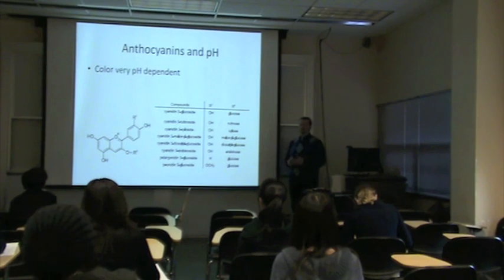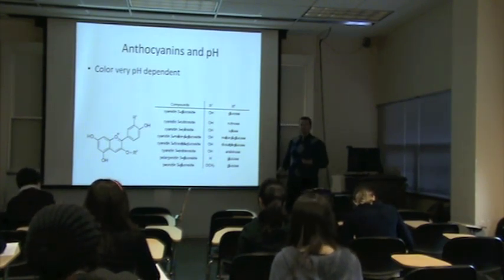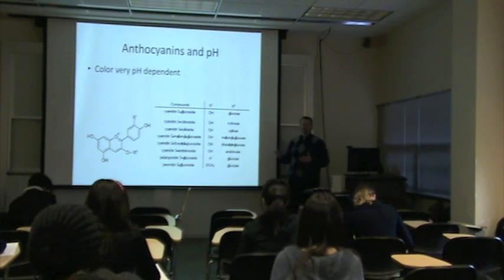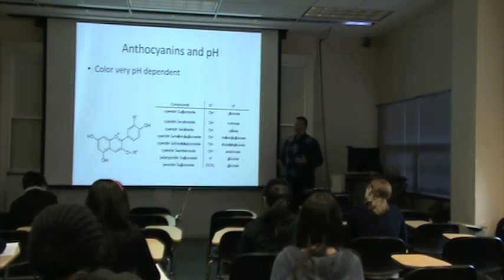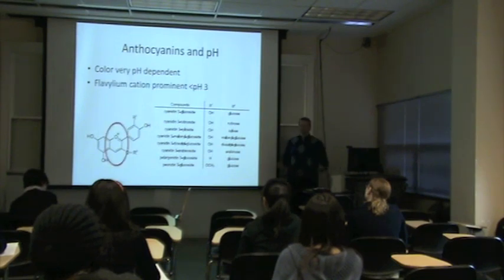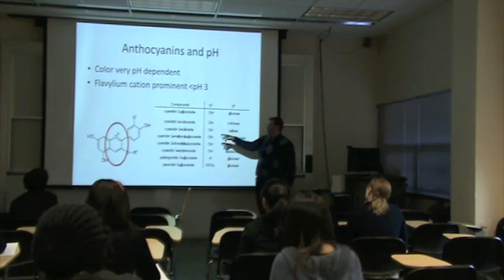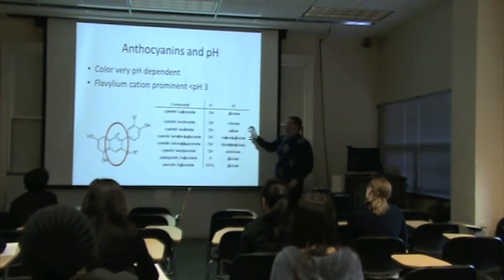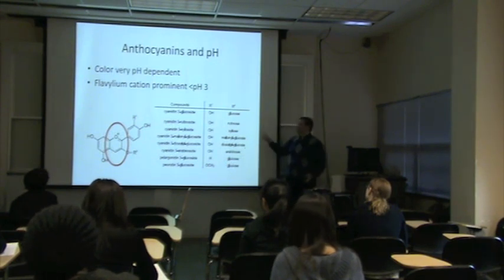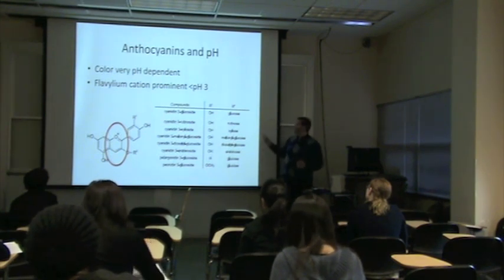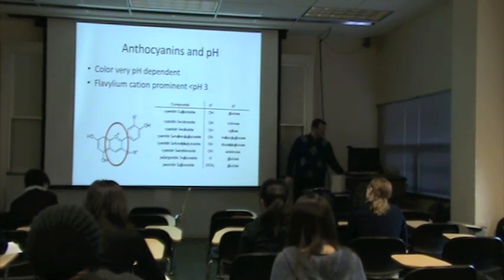pH is very, very important for the color of anthocyanins. If you're at a neutral or more basic pH, they're going to appear blue. If you shift to a pH of 4 to 5, they're going to be colorless. And if you start getting below pH 4, 3, or 2, they're going to be a very red color. This structure of an anthocyanin is called the flavylium cation — the reason it's called that is there's a plus charge on that oxygen. When it is in this form, it's going to be a red color, predominant below pH 3.